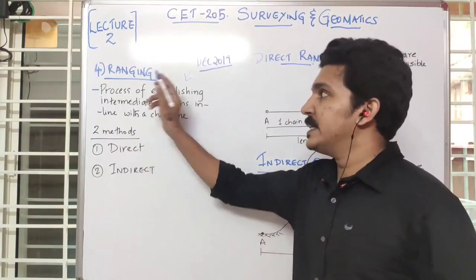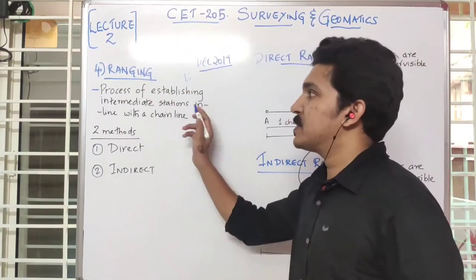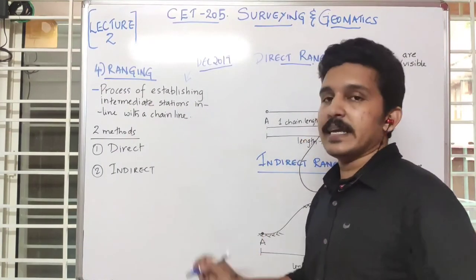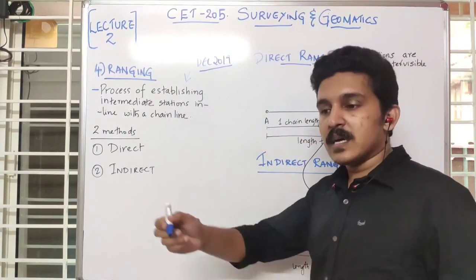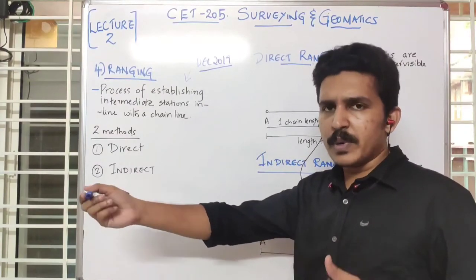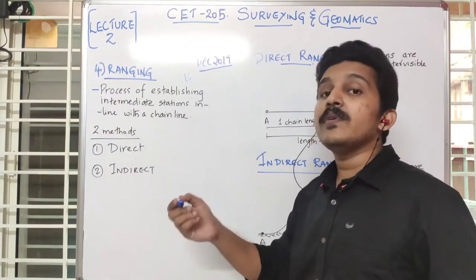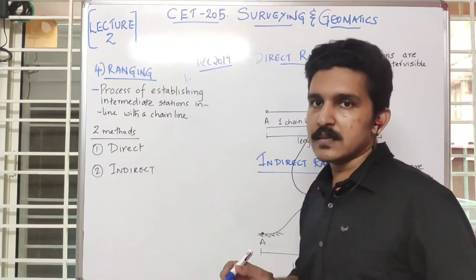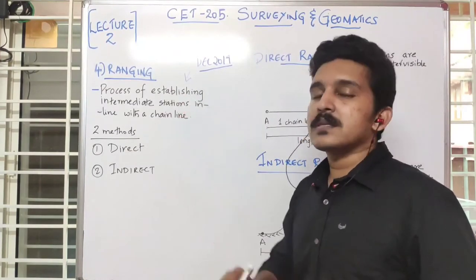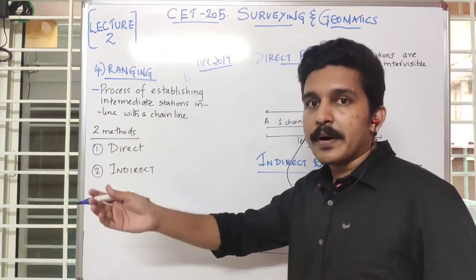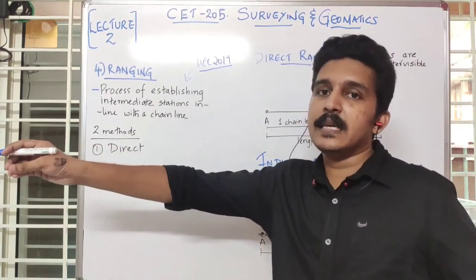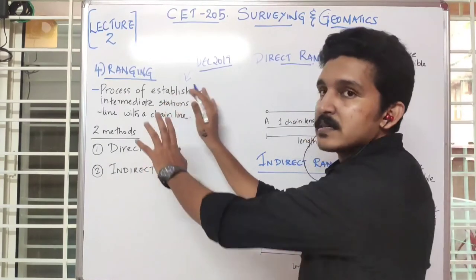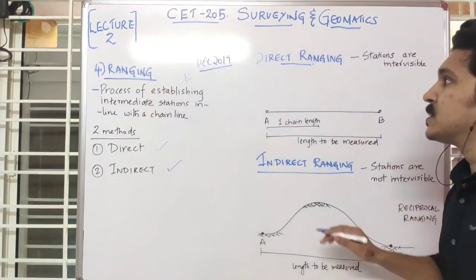What is ranging? Ranging is a process of establishing intermediate stations in line with a chain line. That is, if we measure a length using a chain and we have to provide intermediate points for some reason, then that process is known as ranging — we have to provide intermediate points in the same line as the chain line. There are two methods: direct and indirect.